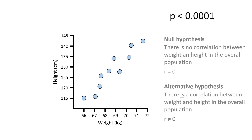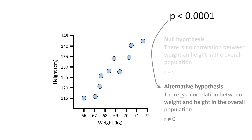In my example, the p-value is so small that it is quoted as less than 0.0001. Therefore, if my alpha level — in other words my significance threshold — was set at 0.05, we then reject the null hypothesis and conclude that there is a correlation between weight and height. Note, we did not state the direction, either positive or negative, of the correlation in our hypotheses. If we did state a direction in the hypotheses, this would mean a one-tailed test is performed.